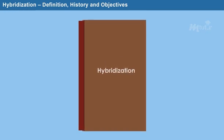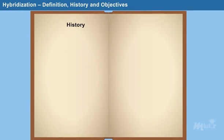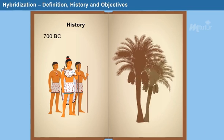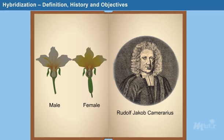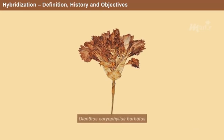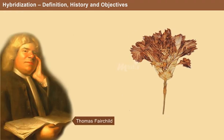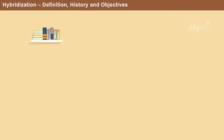Before proceeding, let us rewind the history of hybridization. History reveals that as early as 700 BC, Assyrians and Babylonians hand-pollinated date palms to create metaxenic effects of the pollen. The reproductive parts of plants were discovered by Rodolphe Jacob Camerarius in 1694. The first artificial hybrid was Dianthus cariophilus barbatus, also known as Fairchild's mule, produced by Thomas Fairchild by crossing Dianthus barbatus and Dianthus cariophilus.